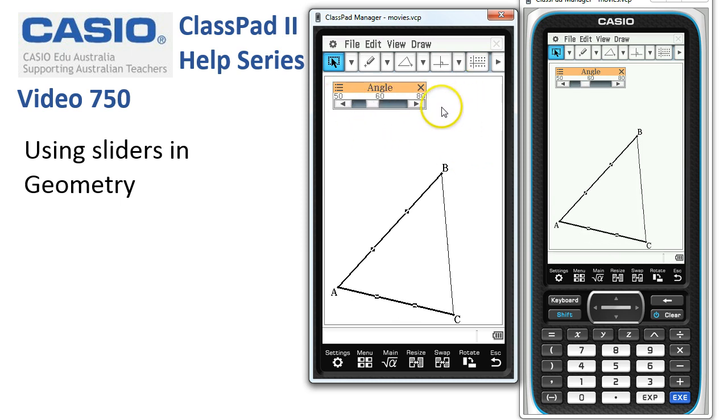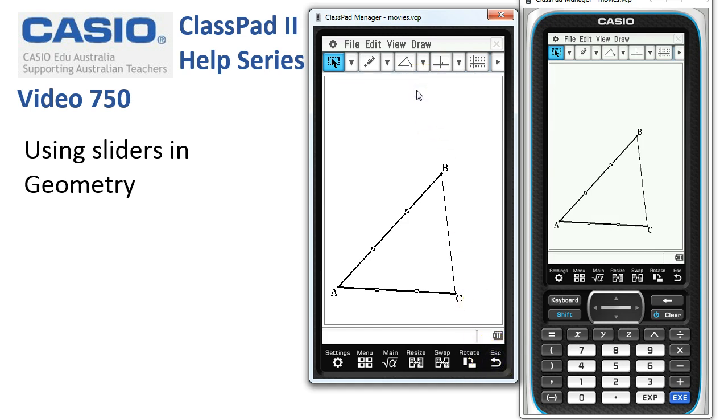So there's one. Now let's stop that, so we'll tap onto escape here and tap on the cross to remove the slider. Now that's one thing we can do with the slider. I'm just going to center the triangle by tapping on equals and select this side here.